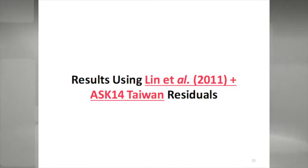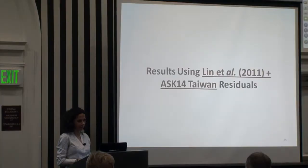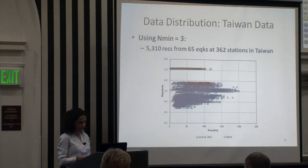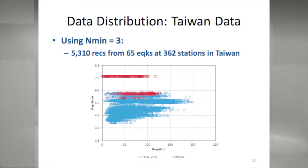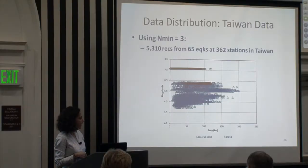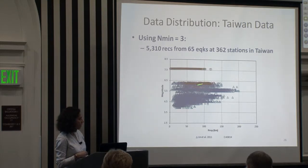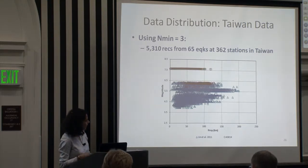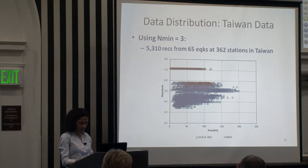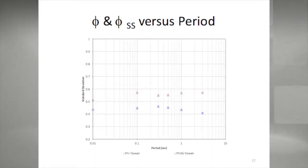I analyzed the Lin et al. Taiwan data mainly to understand why Taiwan phi SS is smaller than California phi SS in the Abrahamson et al. residuals. The Lin et al. residuals for Taiwan have over 10 recordings per station. I added additional residuals from the Abrahamson et al. data set, giving a total of about 5,300 recordings from 65 earthquakes at 362 stations. The resulting phi SS is about 0.4 — again smaller than California, which was about 0.5.